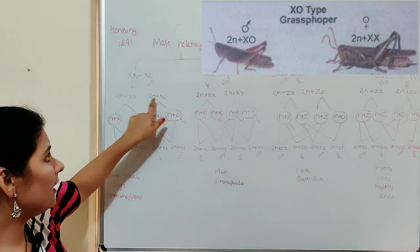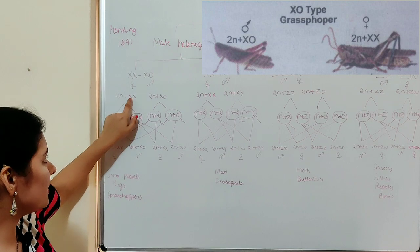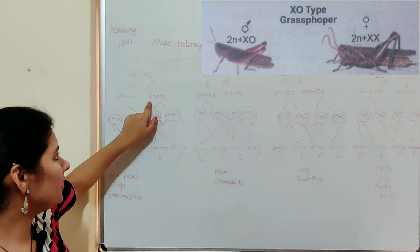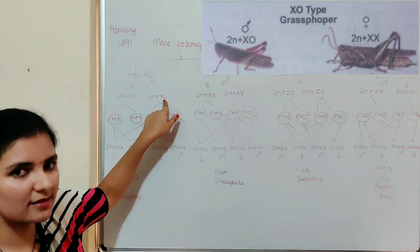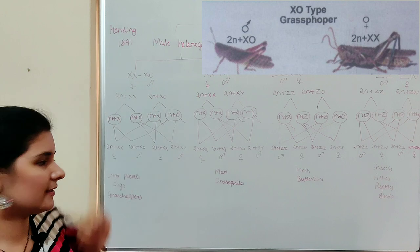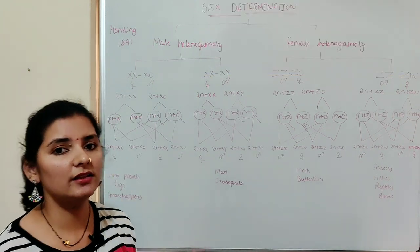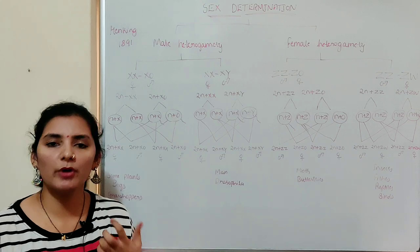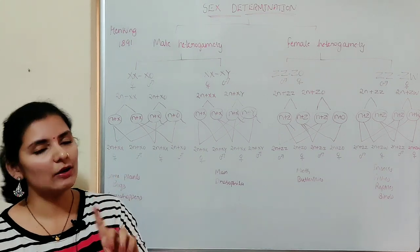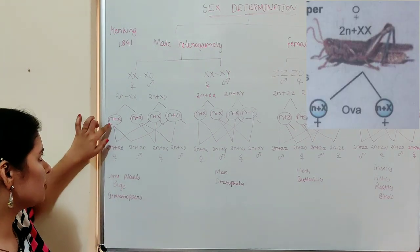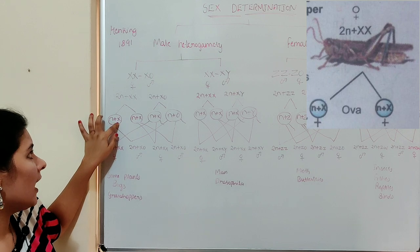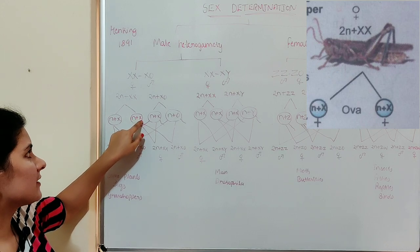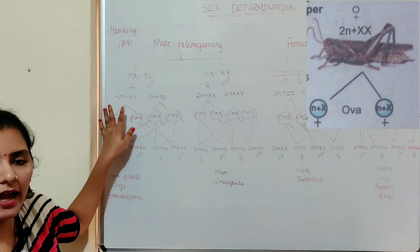The genotype of the female is 2N + XX, where 2N refers to autosomes and XX are the sex chromosomes. The genotype of the male is 2N + X0, where X0 indicates only one X chromosome is present. During gametogenesis, females produce eggs and males produce sperm — all haploid. The egg produced will have N + X (one sex chromosome), and all eggs will carry the X chromosome.